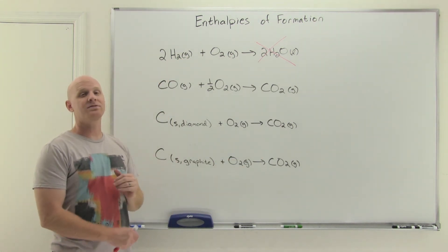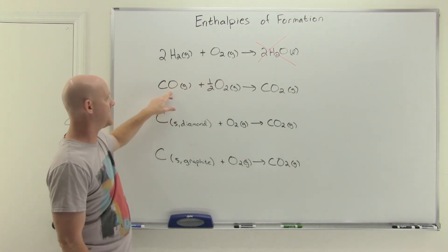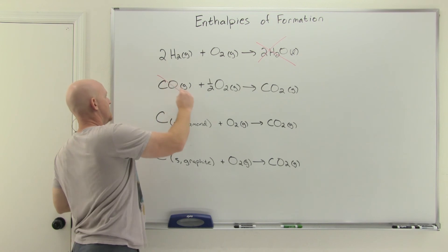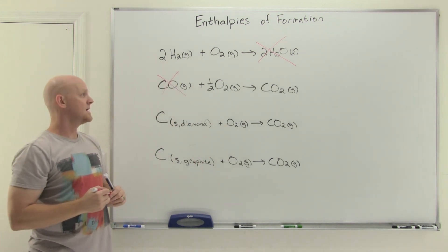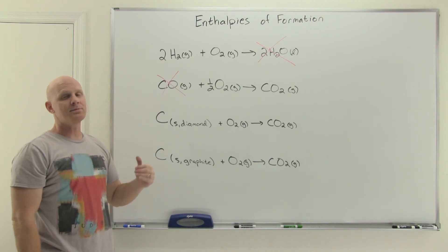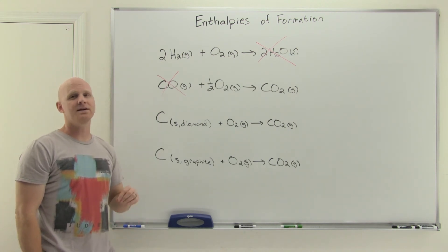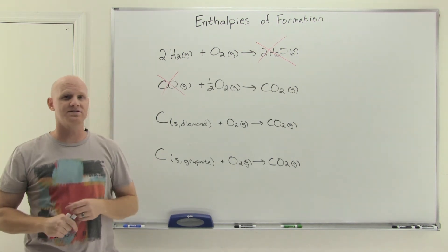Second step is that your reactants have to be only elements. So then I look over here and I said elements, elements, compound. So this one's out. Elements, elements, elements, elements. So far, so good. Got rid of the second one now. So two options left. And now those elements on the reactant side have to be in their standard states. If they're diatomic, you need to know those seven diatomics. And there's one tricky example worth knowing, and that's carbon.